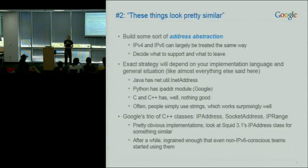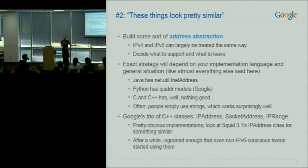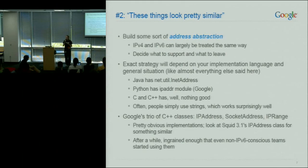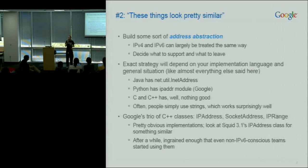We made our own classes: IPAddress, which holds an IPv4 or IPv6 address; SocketAddress, which is the same thing with a port; and IPRange, which we would have called IPSubnet if that name weren't taken. The name IPAddress was also taken, so we moved 4,000 entries of that over to OldIPAddress and made our new class.